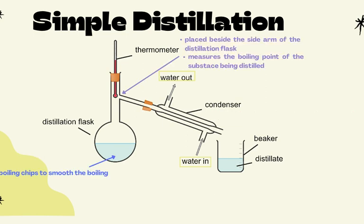A few key points to note: boiling chips are sometimes added to ensure smooth boiling. Make sure the thermometer is placed right beside the side arm of the distillation flask to measure the boiling point of the substance being distilled. Also, ensure that water enters from the bottom end of the condenser so it fills up fully before exiting.